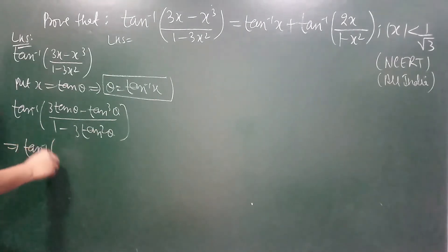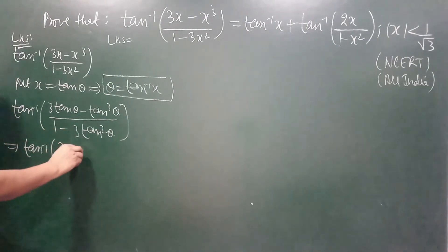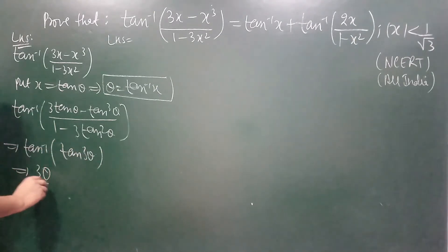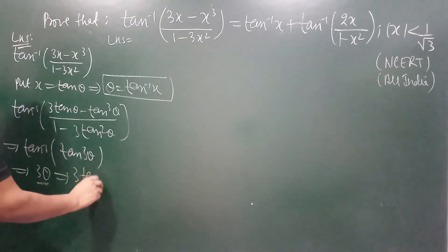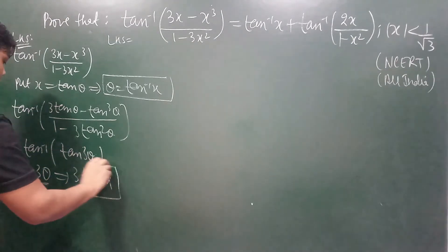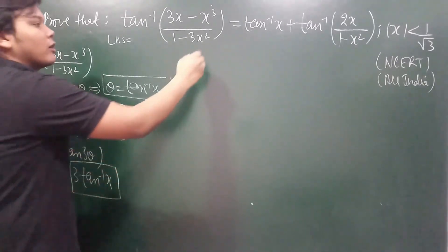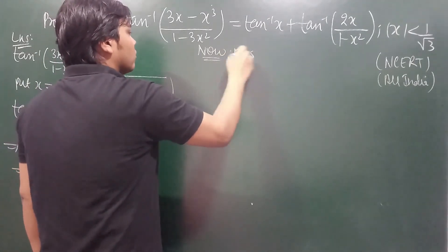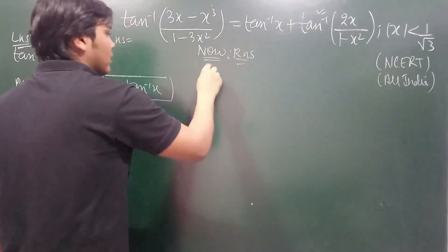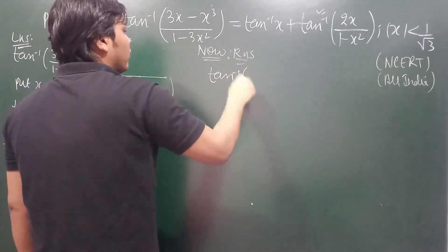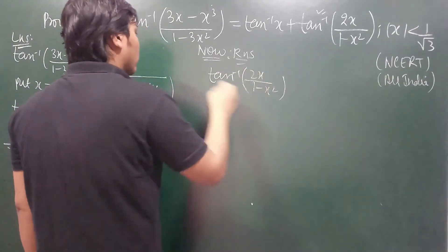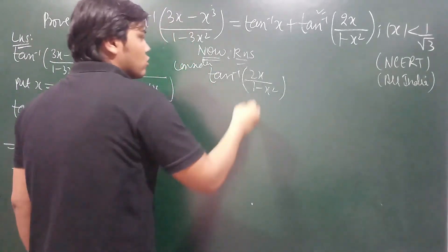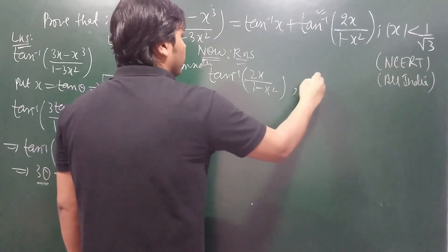We know this is the formula for tan 3 theta. So this becomes tan inverse of tan 3 theta, which simplifies to 3 theta. Since theta = tan inverse x, LHS becomes 3 times tan inverse x.